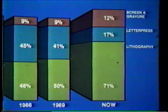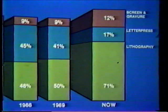Letterpress, including flexography, currently holds approximately 17% of the business. Lithography, 71%. Screen printing and gravure, 12%. In the 1970s, lithography has grown at the expense of letterpress. In the decade ahead, lithography is expected to remain dominant, and gravure to capture between 20% to 30% of the total printing market, both at the expense of letterpress and flexography.